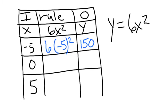Okay. Do the next one. Put 0 in. Well, 0 squared is 0. 0 times 6 is 0. So, that's what you get out of that.